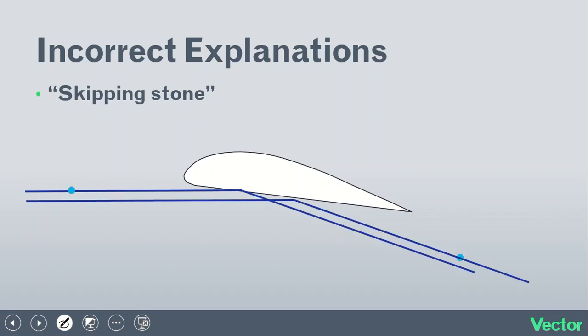Newton's third law, of course, says that every action has an equal and opposite reaction. So basically the way people explain this is that when the air ricochets off the bottom of the airfoil, and when it ricochets, there's an equal and opposite upward reaction. So the air sort of pushes the airfoil up.